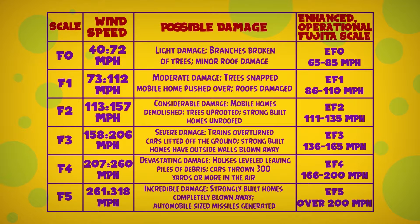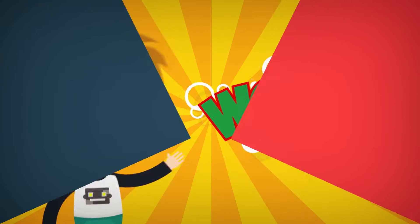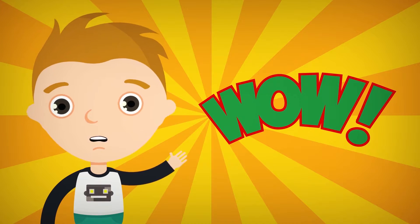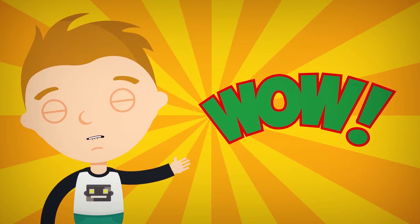F5: 261 to 318 miles per hour — incredible damage, strongly built homes completely blown away, automobile-sized missiles generated. Tornadoes can really do a lot of damage.